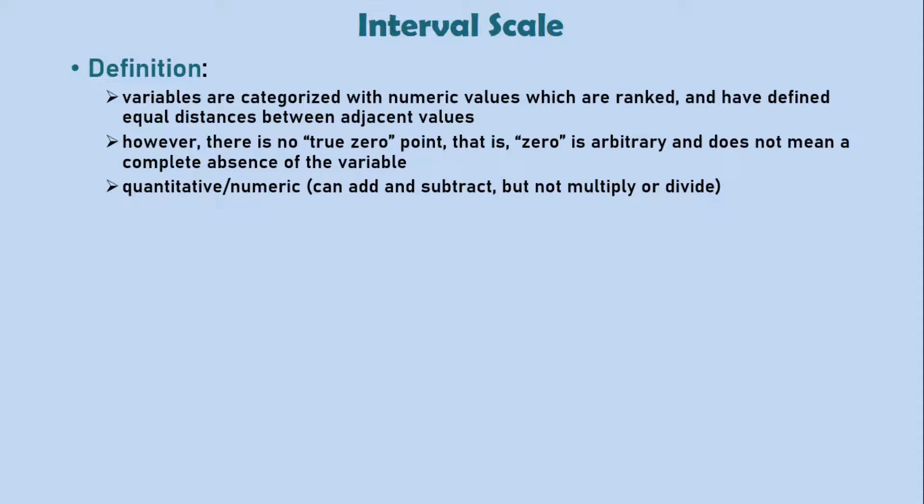However, because of this ability for an interval scale to dip below zero, you can only find differences or sum the values on an interval scale. You cannot find ratios between two values. That is, you cannot multiply or divide values on an interval scale. This is because there isn't a common reference or starting point.